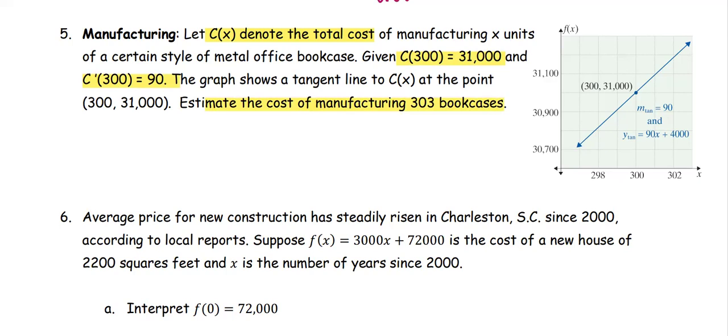The line represents the graph of the cost function. We use the slope C'(300) = 90, where the coordinate x₁ is 300 and y₁ is 31,000.